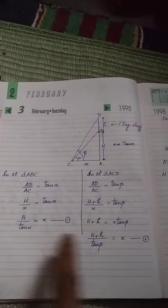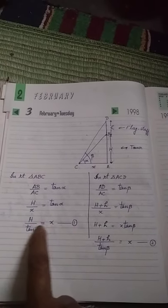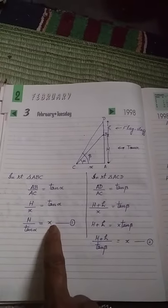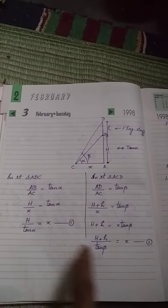Now you see equation 1, x equals this one, and equation 2, x equals this one. When right sides are equal, then left sides will also be equal. So from equation number 1 and equation number 2,